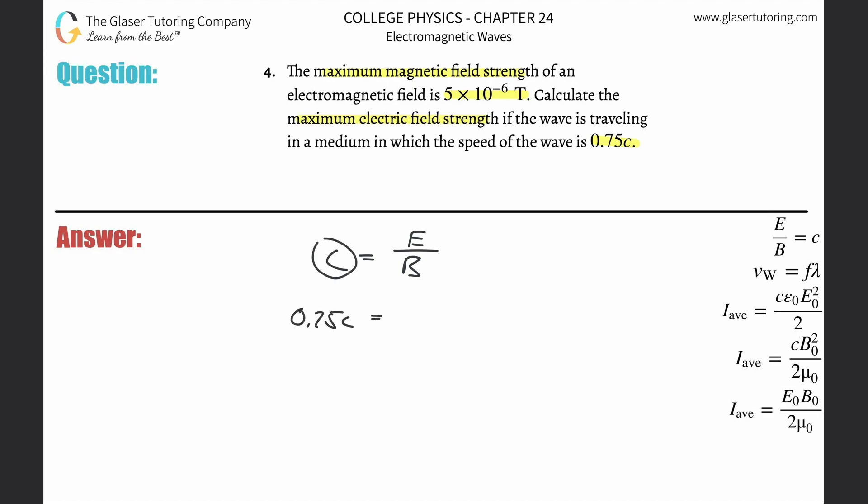Just consider that to be like the velocity. We also know the value of c—that's probably a memorized value your professor or teacher might give you—but three times ten to the eight is the speed of light.